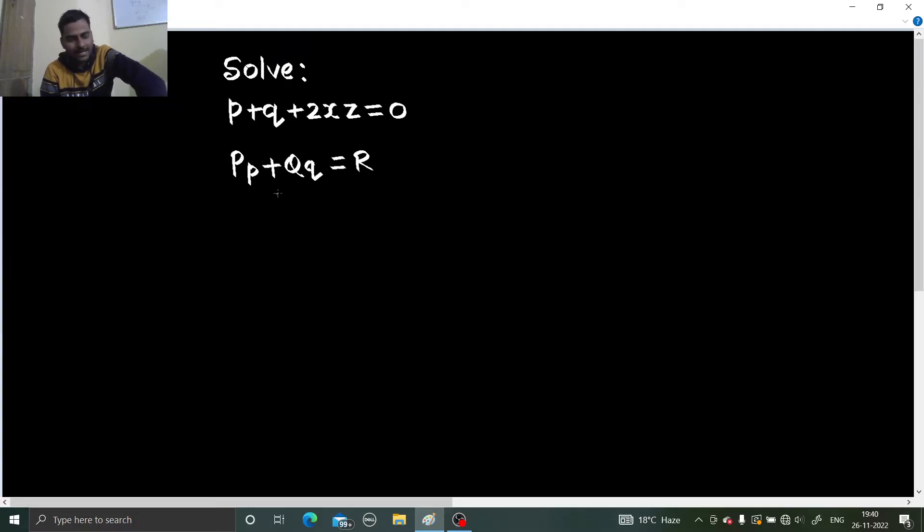This is Lagrange's format of problem where we first write our auxiliary equation which is nothing but dx divided by capital P equals to dy divided by capital Q equals to dz divided by capital R. But if these three are sufficient to form two equations then it is fine, otherwise we move to forming some more fractions using multipliers.